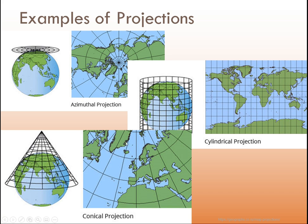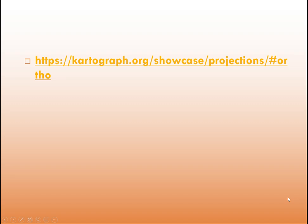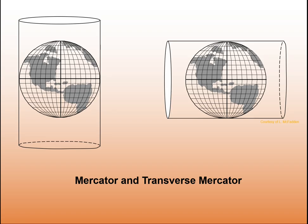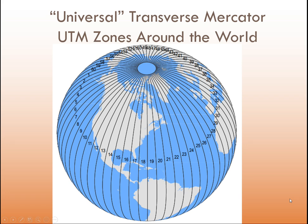With the conical projection, directions are not consistent and scale changes more at lower latitudes. There are also interactive web pages you can use to explore different projections. A transverse Mercator is a cylinder turned sideways; if it were at some other angle we would call it oblique. A standard Mercator is a cylinder wrapped around the earth's sphere.